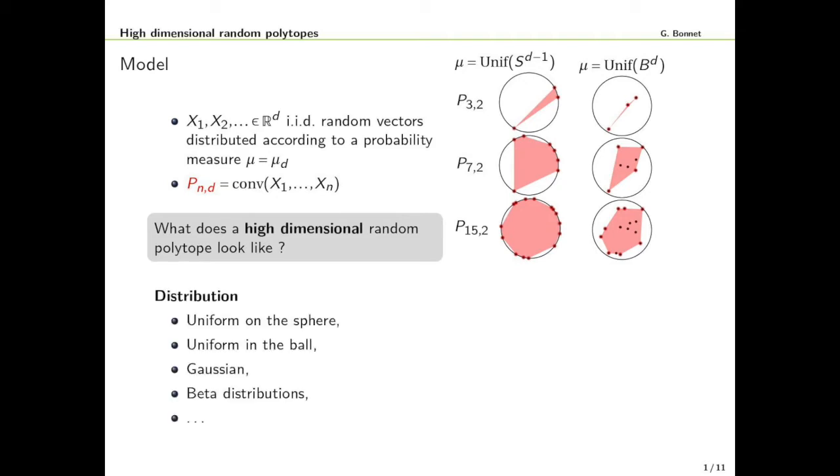This general model has a large number of degrees of freedom. The first being, we need to choose a sequence of distributions which lives in any dimension. That can be, for example, uniform distribution on the sphere or on the ball, Gaussian distribution, beta distributions, etc.